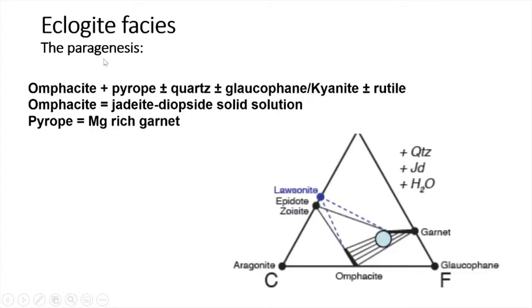The eclogite facies is the high-pressure facies. The paragenesis is omphacite + pyrope ± quartz, with glaucophane or kyanite also possible. Rutile is a very diagnostic feature of high-grade metamorphism of mafic rocks — especially in eclogite facies you can expect rutile. Omphacite is a pyroxene (jadeite-diopside solid solution), and pyrope is a magnesium-rich garnet.